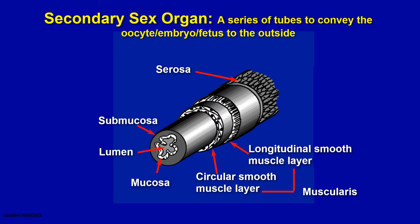Our previous lecture focused on the ovary, which is considered to be the primary sex organ of the female animal. Now let's proceed to the secondary sex organ — a series of tubes that convey the oocyte, the embryo, and the fetus to the outside. These include the oviduct, the uterus, the cervix, the vagina, and the external genitalia.